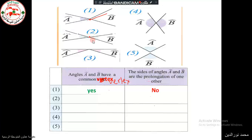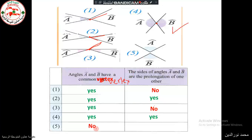For figure two, yes — they have a common vertex and the side of one is a prolongation of the other. For figure three, they have a common vertex but the sides are not prolongations of each other — so no. For figure four, they have a common vertex and the sides are prolongations — yes. For figure five, there is no common vertex.